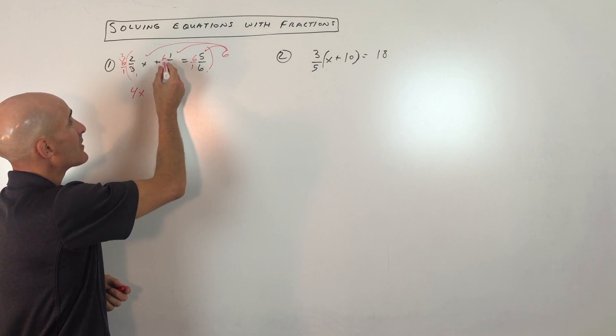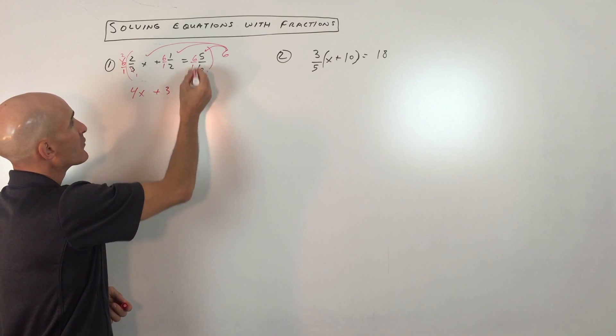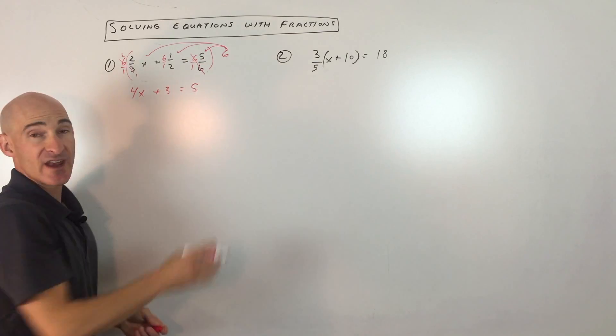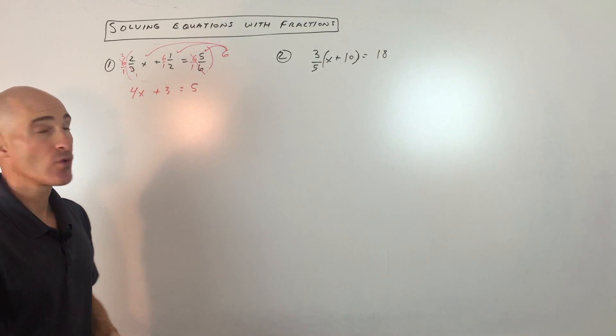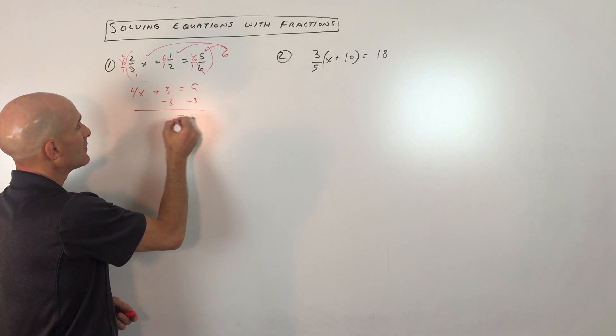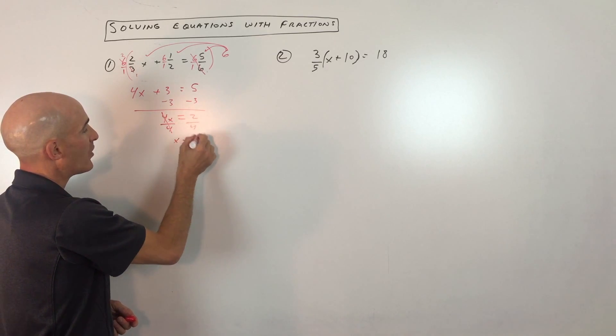Over here, same thing. 6 divided by 2 is 3, 3 times 1 is 3, so we just get 3. And then over here, you can see the 6s cancel, so we just end up with 5. So we've cleared the denominators. Now it's a lot easier to solve this equation. We're just going to subtract 3 from both sides. And then we're going to divide both sides by 4, because we just want to get x by itself, and we get 1 half.